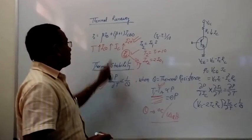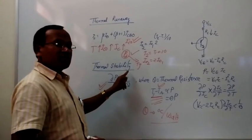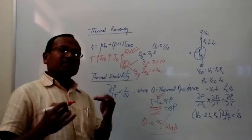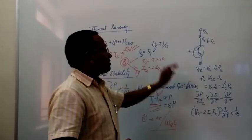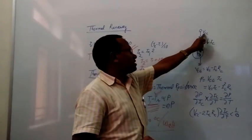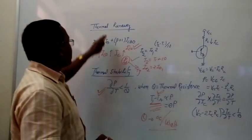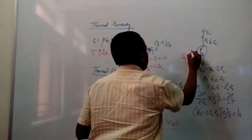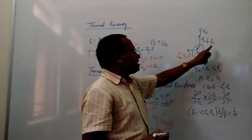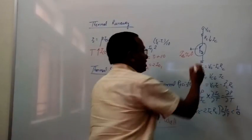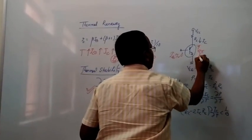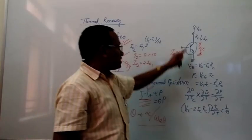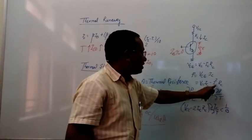Now let us apply this theoretical concept to a practical BJT circuit. In this simple circuit, there is a supply VCC, a collector resistance RC, and a collector current IC. Since thermal runaway is the extreme condition where IC is very large, IB becomes negligible compared to IC. So VCE = VCC − IC·RC, and the power across the transistor is P = VCE·IC = VCC·IC − IC²·RC.